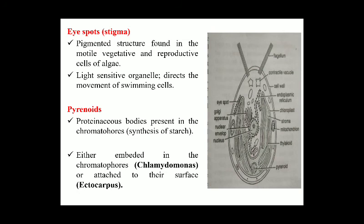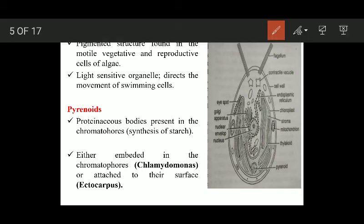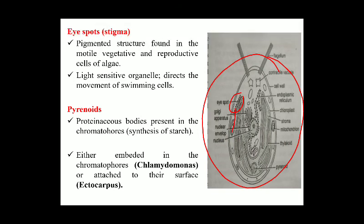Now the eye spot or stigma. The eye spot or stigma is a pigmented colored structure found in the motile vegetative and reproductive cells of algae. For example, in the cell of Chlamydomonas you can find this pigmented structure. The main function of the eye spot is that it acts as a light-sensitive organelle — it directs the movement of motile cells towards light.